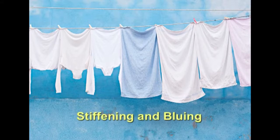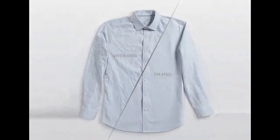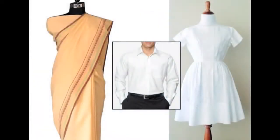Let us understand stiffening and bluing. Cotton fabrics need stiffening to improve their body, unlike linen which is generally stiff in nature. Starch is used to stiffen cotton clothes. The amount of stiffness required is based on the end use. Sarees, shirts, and dresses may require medium stiffening to help in proper draping. All lightweight cottons are stiffened using light starch.